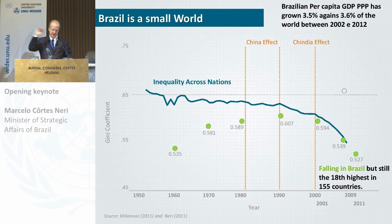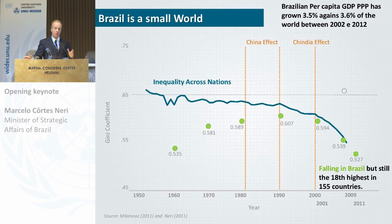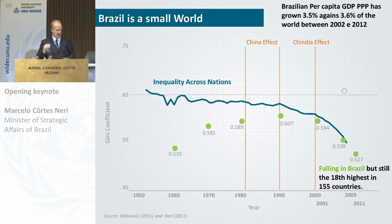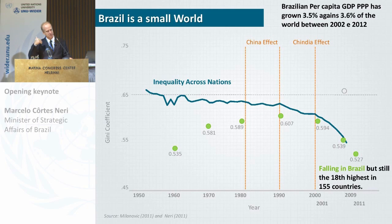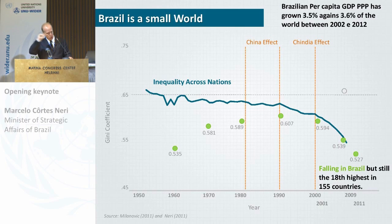Another graph from Branko Milanovic shows the trend of inequality between countries weighted by population — inequality between countries without taking into account inequality within countries. We see after the 1990s a fall in inequality between countries given the growth of China, and then in the 2000s a further decline because of India's growth as well. So inequality between countries is falling.